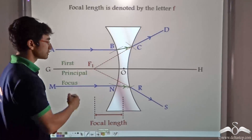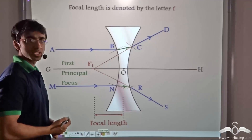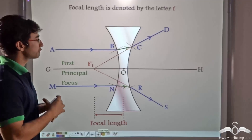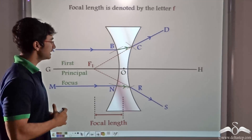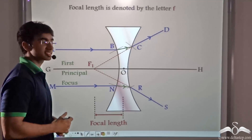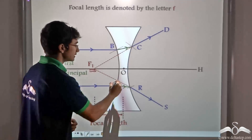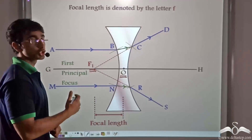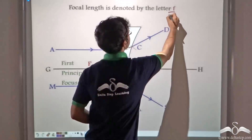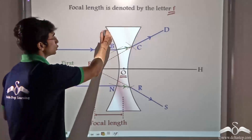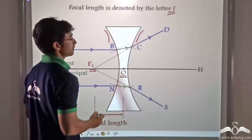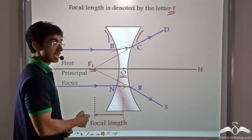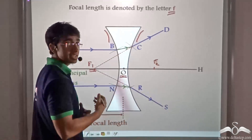Now we have defined the first principal focus of the concave lens. The focal length of a concave lens is conventionally defined as the distance between F1 and the optical center O of the concave lens, and the focal length is usually denoted by the letter F. If the two curved surfaces have an equal radius of curvature, then the distance between O and F1 and O and F2 will be equal.